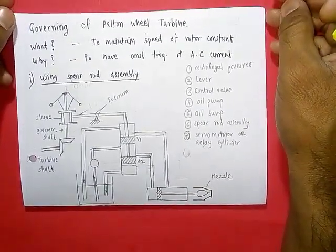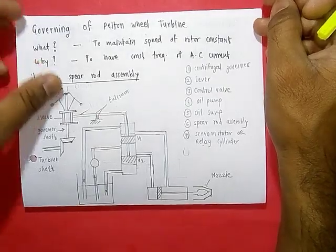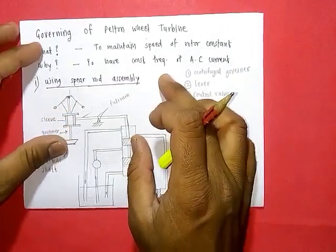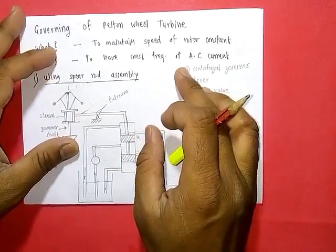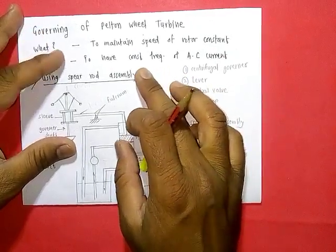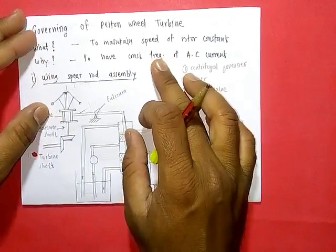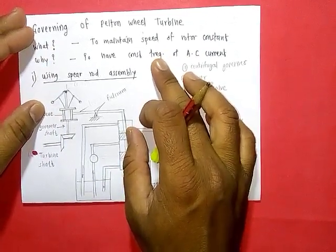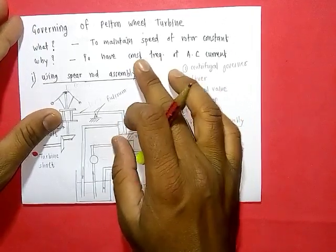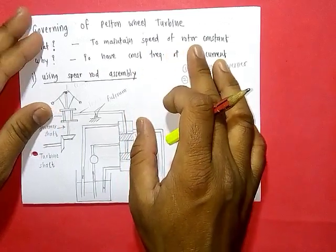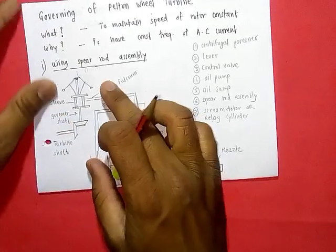Next is governing of turbines. We need governing because to maintain constant frequency of AC current produced by the generator, we must maintain the speed of the rotor constant. Governing means maintaining the speed of the turbine or rotor constant.